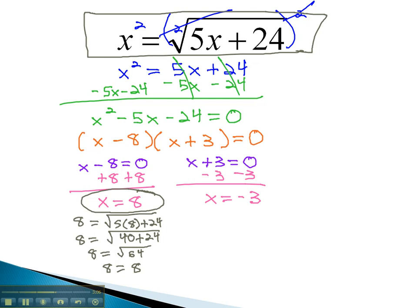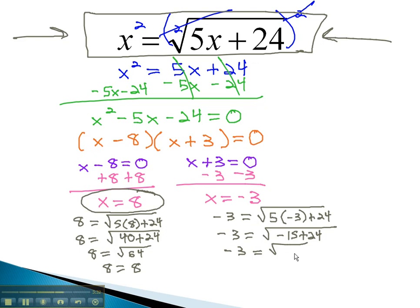Let's test the negative 3. Going back to the original problem and replacing the x's with negative 3 gives us negative 3 equals the square root of 5 times negative 3 plus 24. We now have negative 3 is equal to the square root of negative 15 plus 24. And when we add those together, negative 15 plus 24 is 9. This gives us negative 3 is equal to the square root of 9, which is 3. Notice, negative 3 is not the same as positive 3. This means the answer negative 3 is extraneous, or does not work in the original equation.